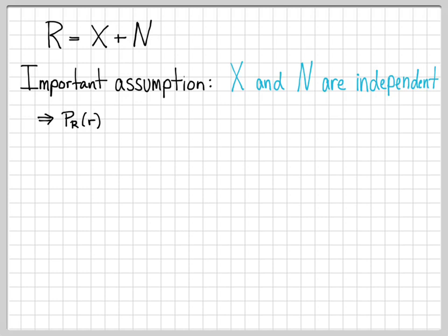This is a very common assumption in digital communications: channel noise is independent of what is transmitted. And it's a very nice mathematical assumption because if X and N are independent, then since R is the sum of two independent random variables, the probability density function of R is simply the probability density function of X convolved with the probability density function of N.